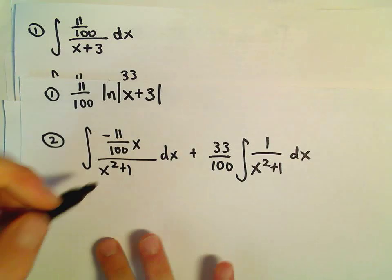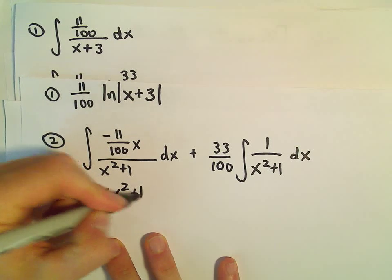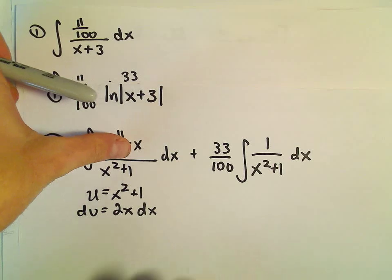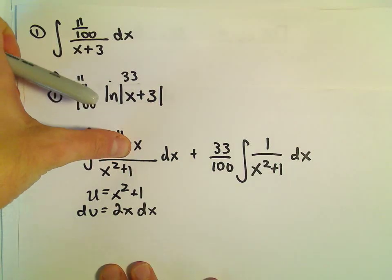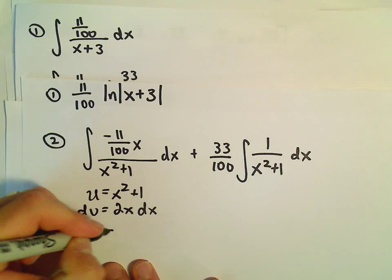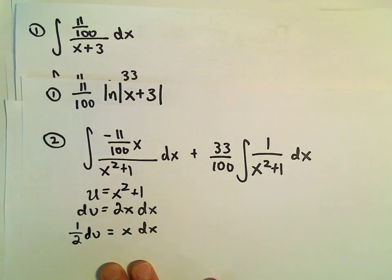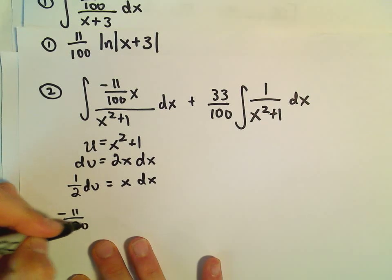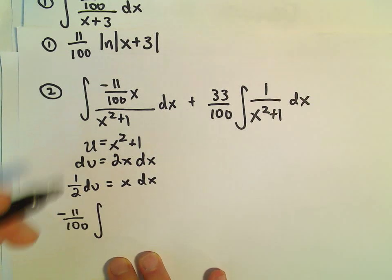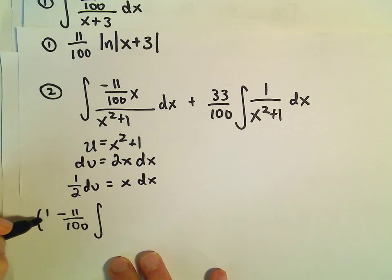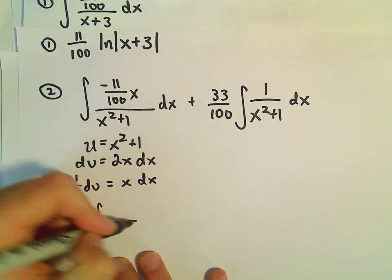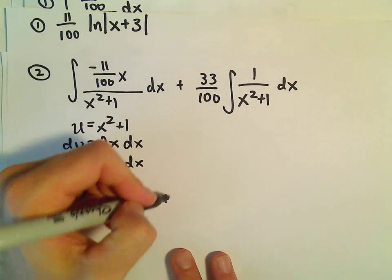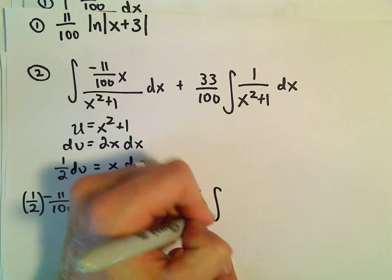To get the first part, we just do a u-substitution. We let u equal x squared plus 1, so du equals 2x dx. We multiply both sides by 1 half to get an expression for x dx. We pull the negative 11 over 100 out, replace x dx with 1 half du, and we just have u in the denominator. The second part, we can use our arctangent formula on.